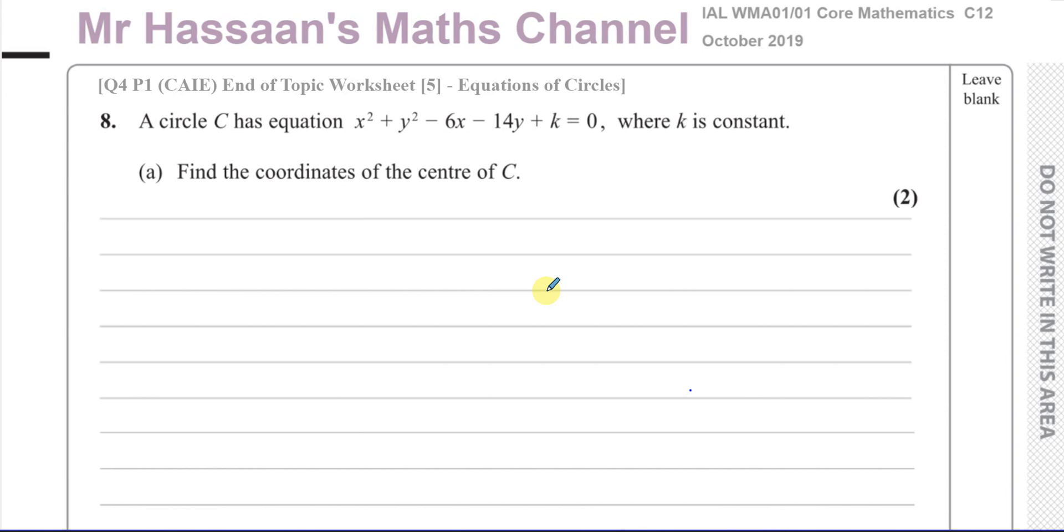We know that when we express an equation of the circle in the form (x - a)² + (y - b)² = r², then a and b are the center of the circle. So what we need to do is complete the square.